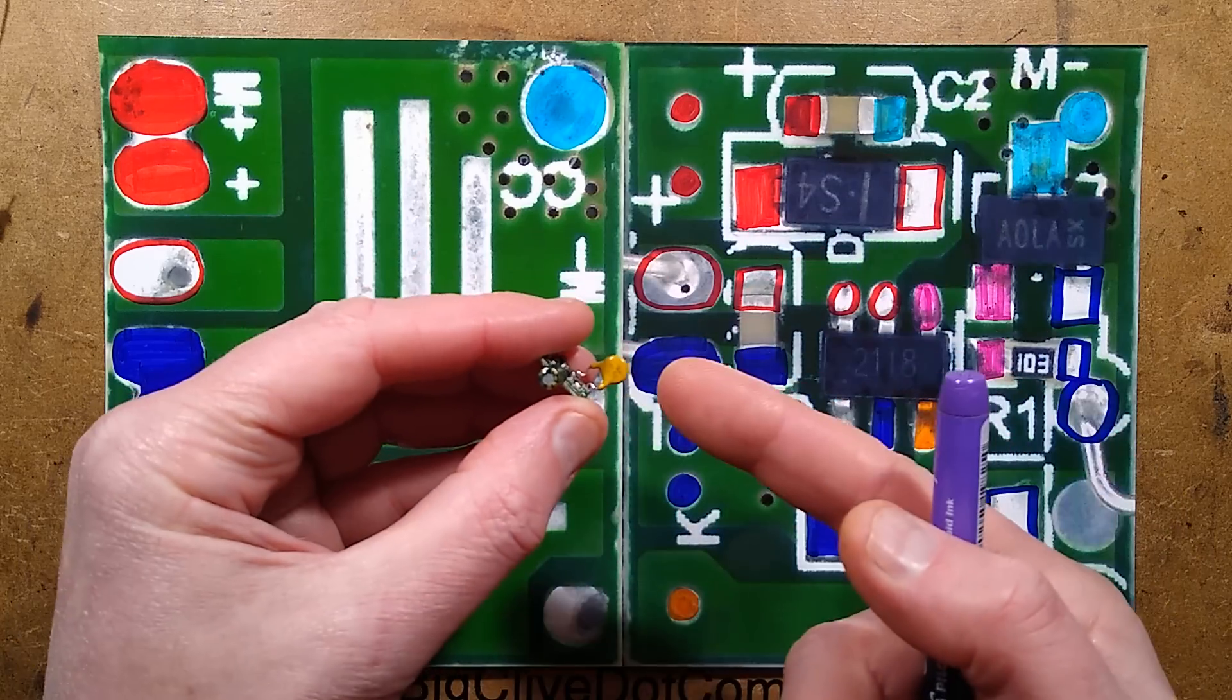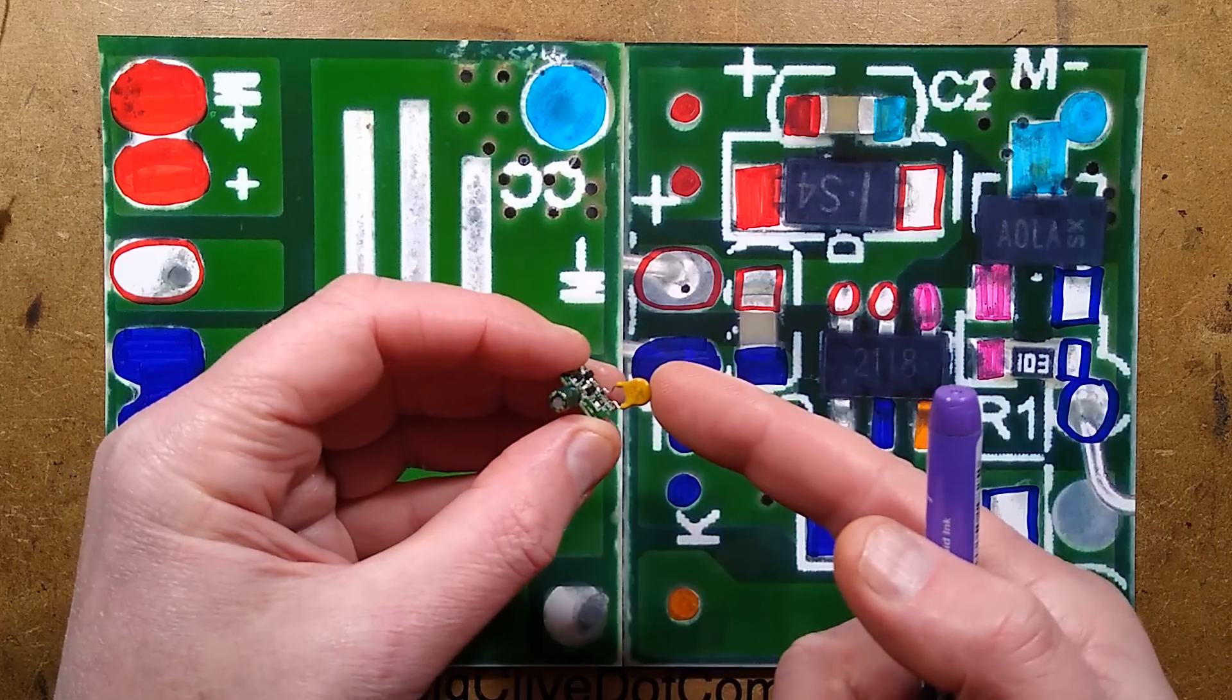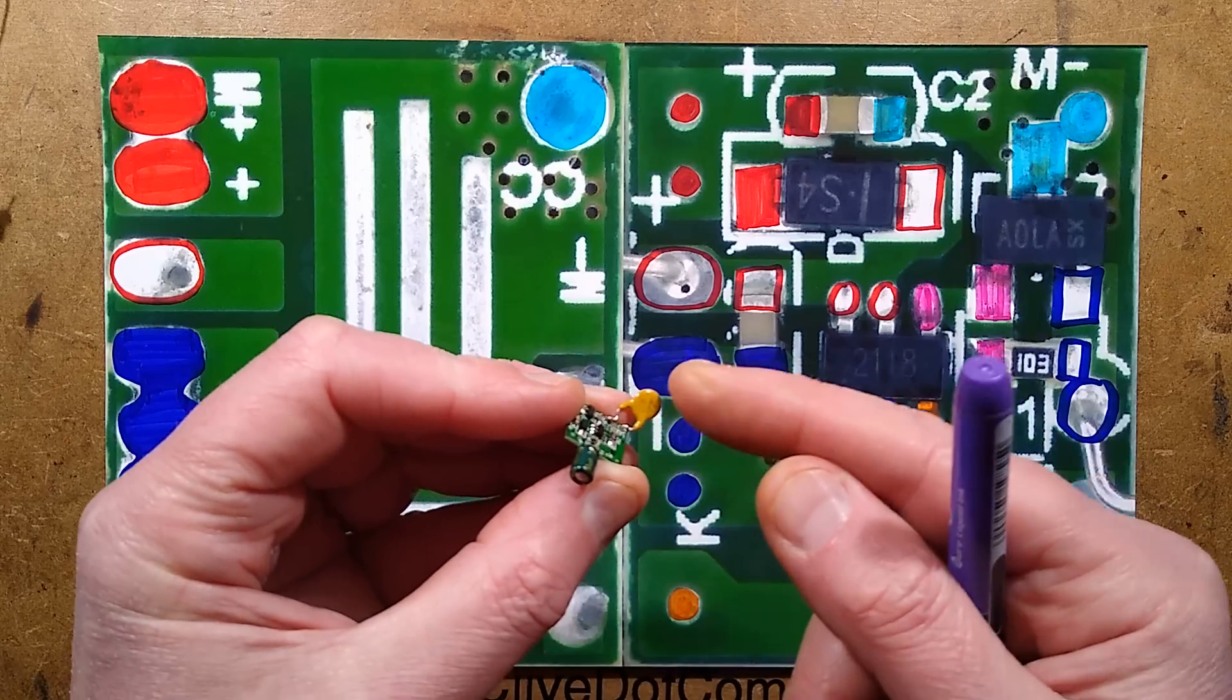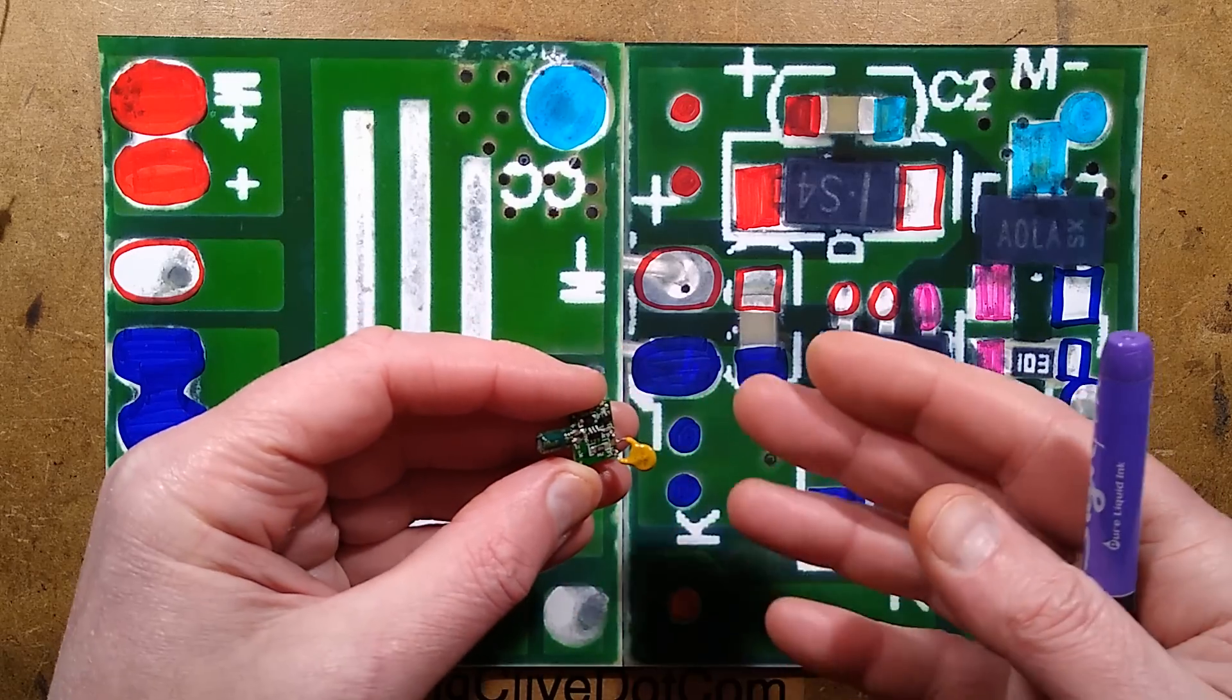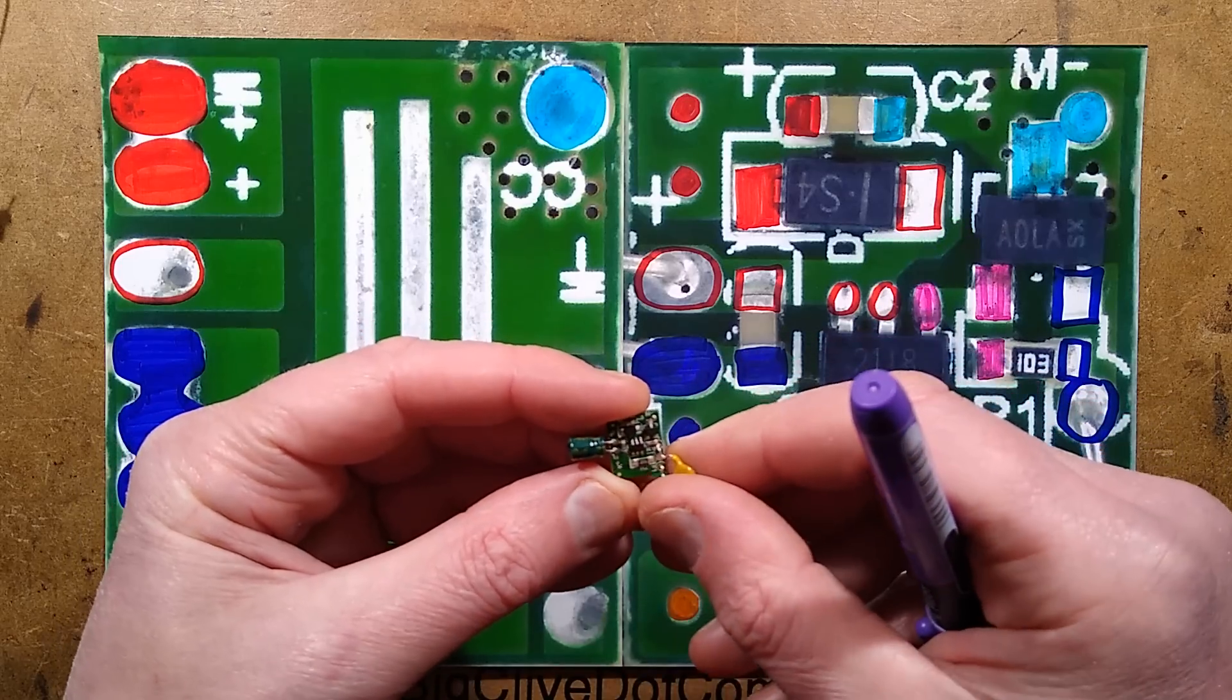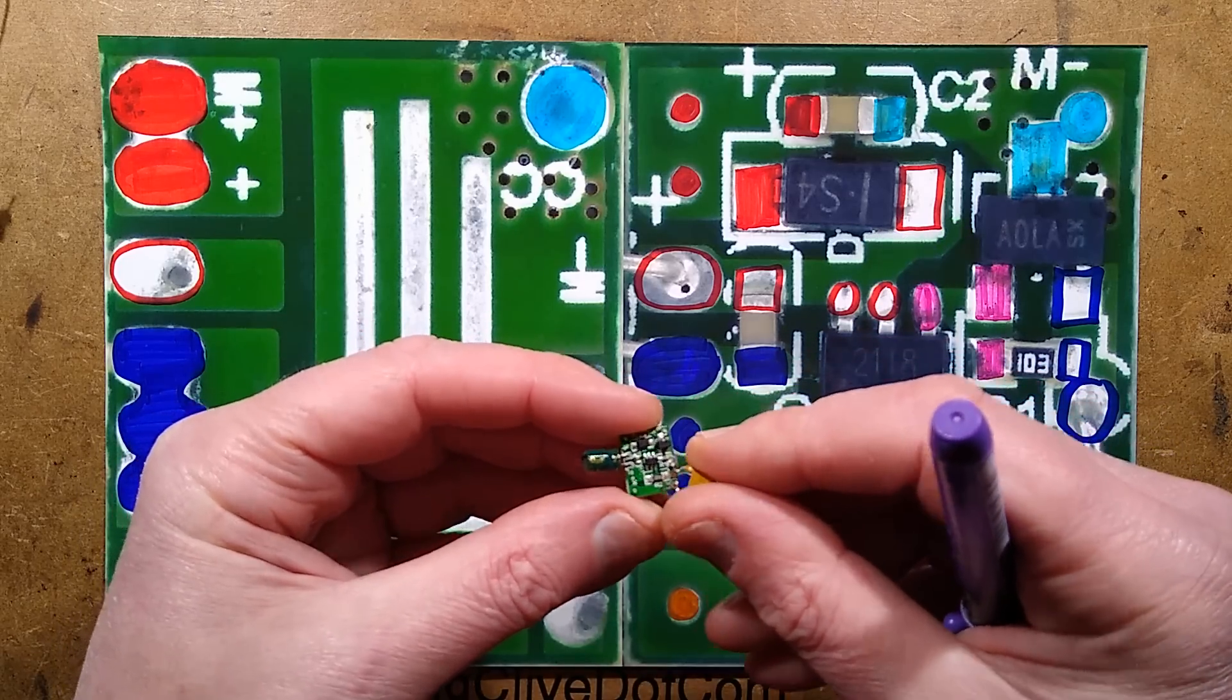Other things worthy of note, there is this little PTC thermistor here that is an overcurrent device. Not quite sure what its rating is, but I think it's around about an amp, although it held at an amp, but they would do. It takes a while for them to warm up. I tested that.